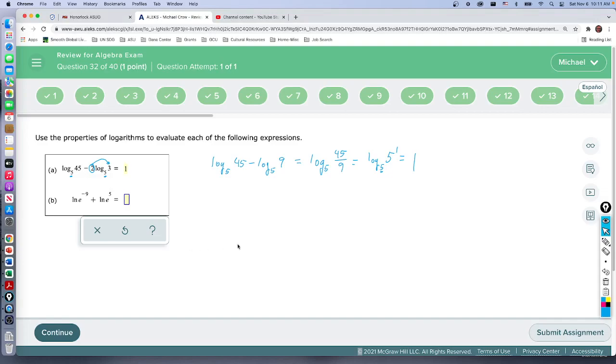So the answer for this is 1. All of that to get the answer for the first one: just the number 1. Okay, so let's do this second one. We're adding, so we're going to multiply these two. We get natural log of e to the minus 9 times e to the 5. When you're multiplying, that's all inside the natural log.